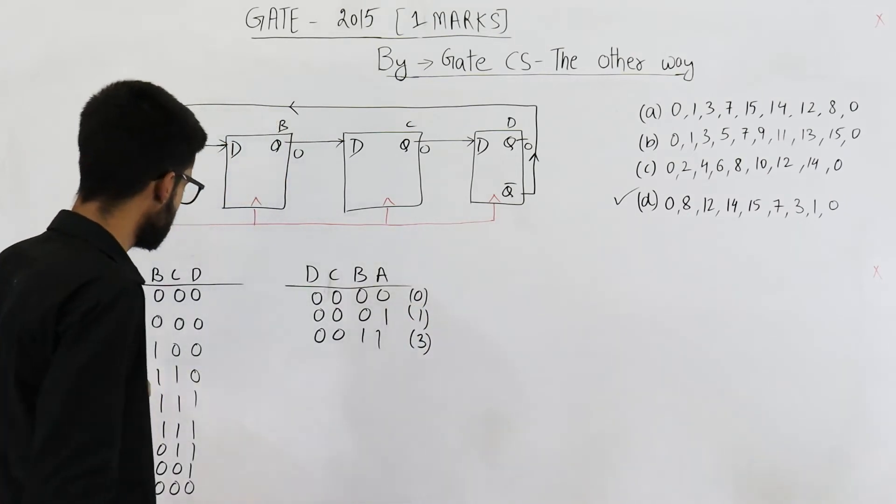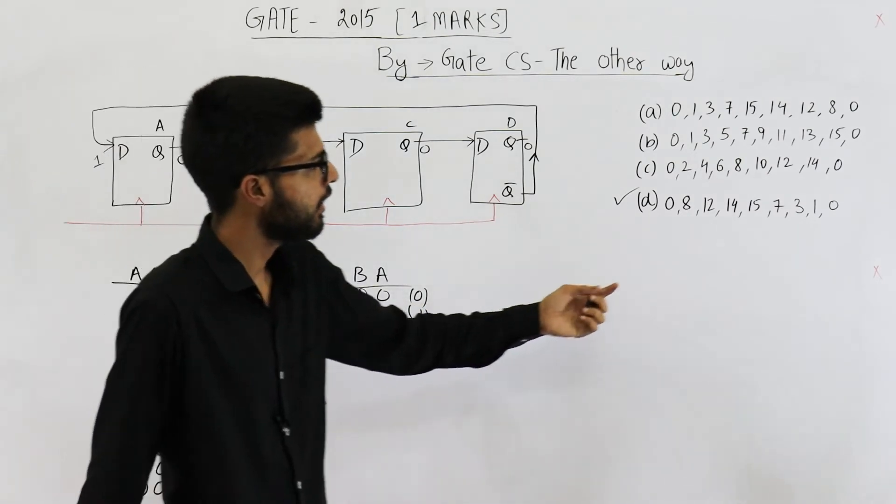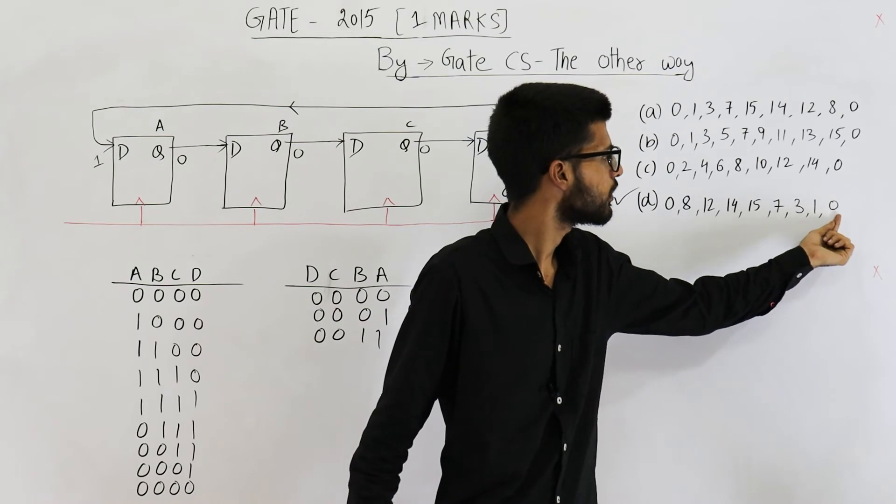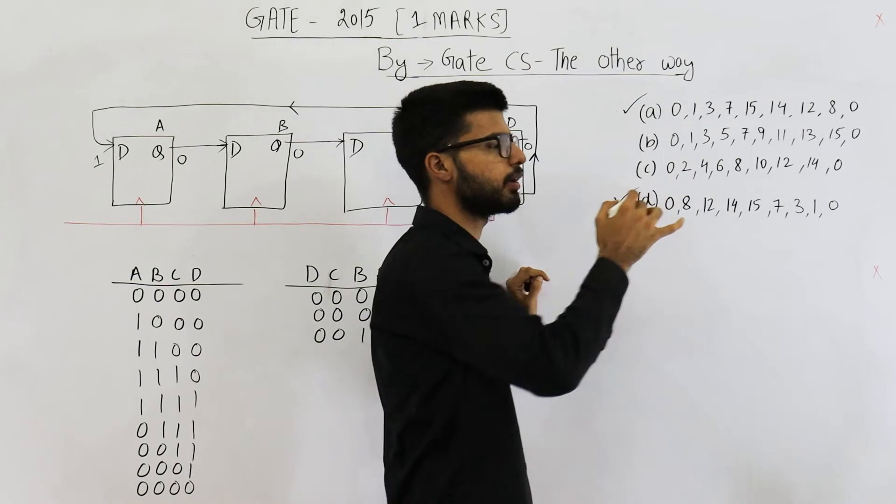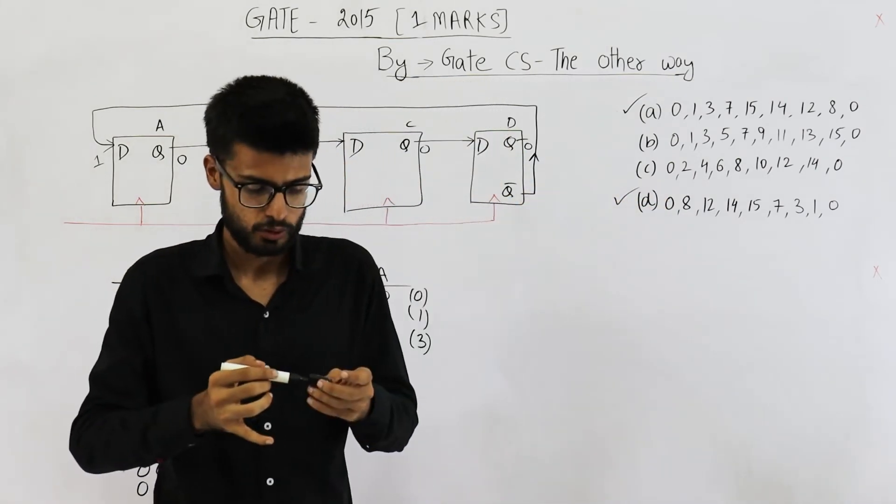You can see we'll just reverse this and it will start from here 0, 1, 3, 7, 15 and so on, which is exactly same as option A. So, option A is also correct.